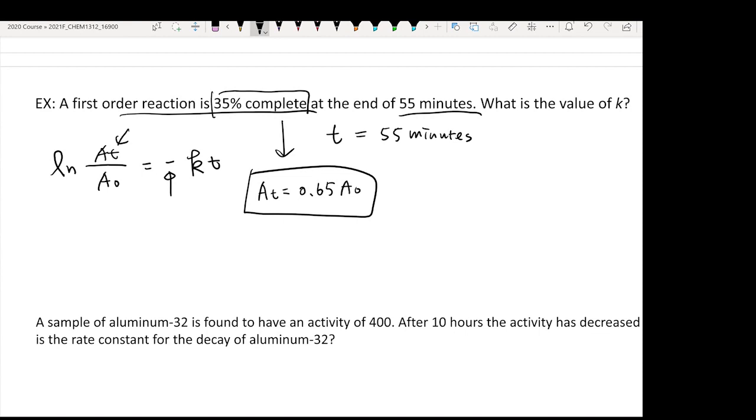You don't care about how many things are consumed. This equation only cares about how much of the reactants I still have at this specific time. Since the reaction is 35% complete, what I really want to say is there's still 65% of the reactant remains. So you need to know your At equals 0.65 A0.